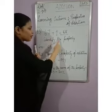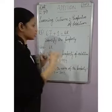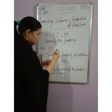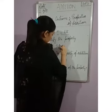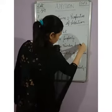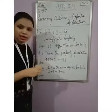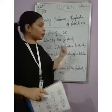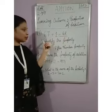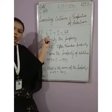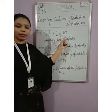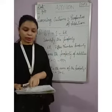The next part is to identify the property. We are getting 68, which is the number after 67. So the property is the after number property. When we add 1 to any number, we get the answer which comes just after that number. So what is the number after 67? It is 68. If you add 1 to 67, you get 68. This is the after number property.